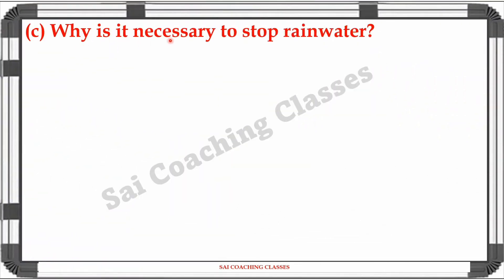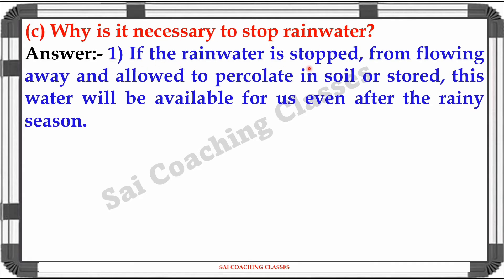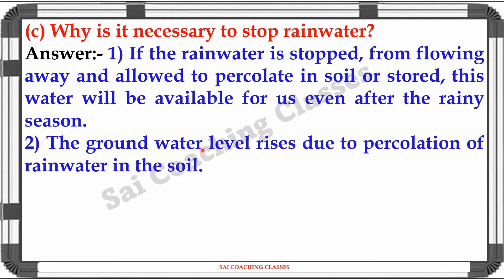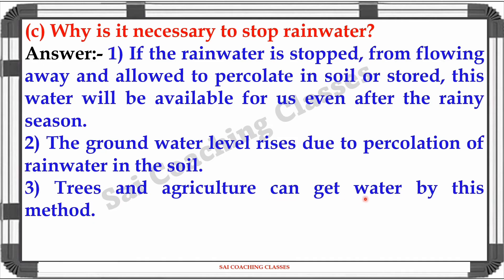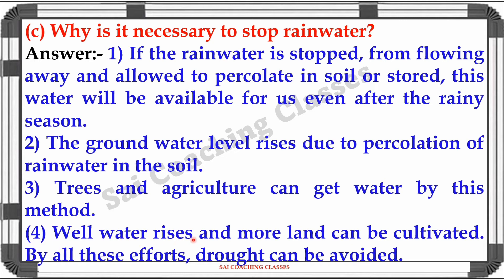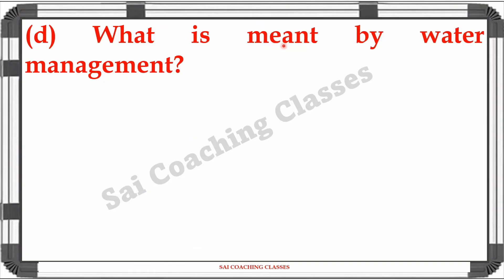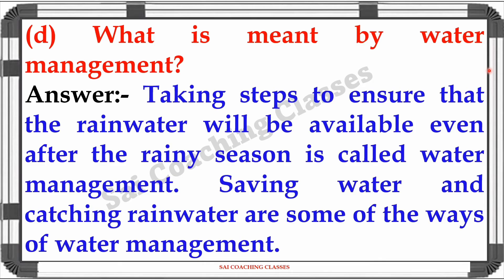Question 6: Why is it necessary to stop rainwater? Answer: If the rainwater is stopped from flowing away and allowed to percolate in soil or stored, this water will be available for us even after the rainy season. The groundwater level rises due to percolation of rainwater in the soil. Trees and agriculture can get water by this method. Well water rises and more land can be cultivated by all these efforts, and drought can be avoided. What is meant by water management? Answer: Taking steps to ensure that the rainwater will be available even after the rainy season is called water management. Saving water and catching rainwater are some of the ways of water management.